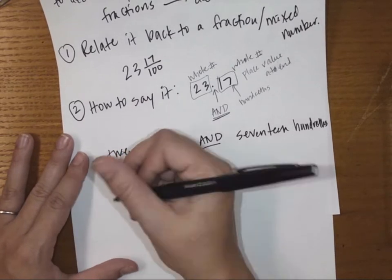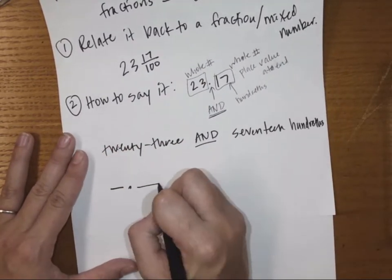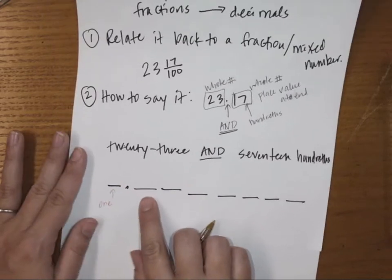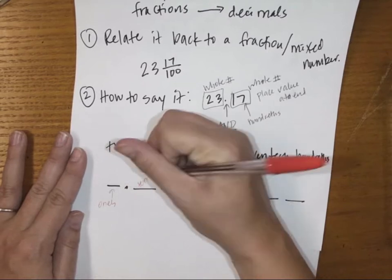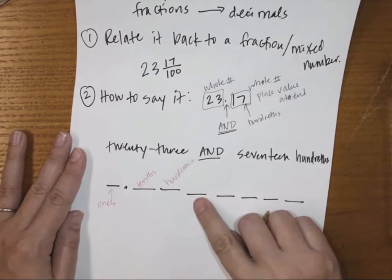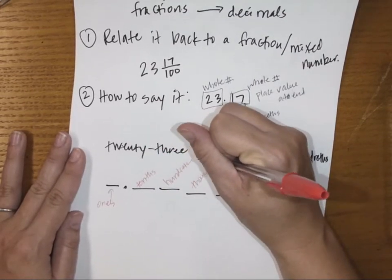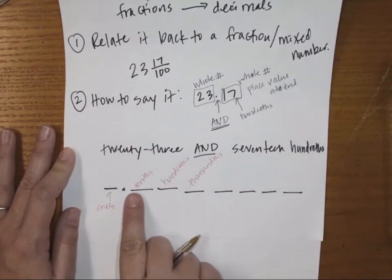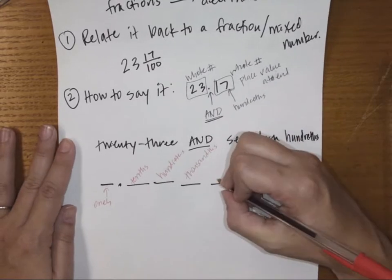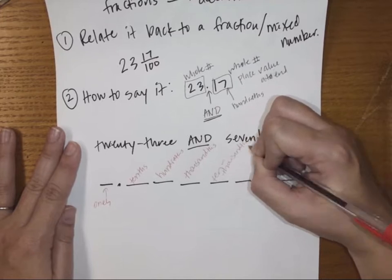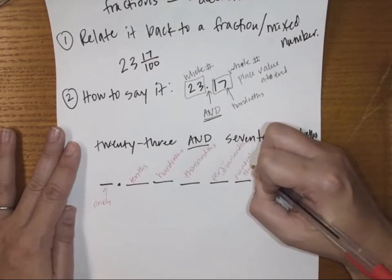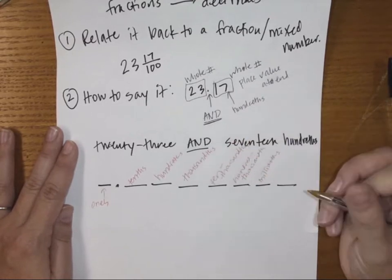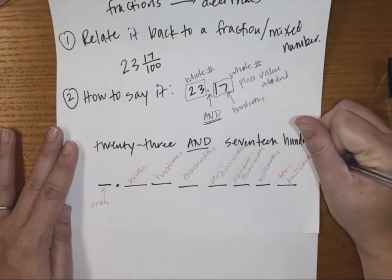As a reminder of place values: the ones place is right before the decimal. The first place value after that is the tenths, then hundredths, then thousandths — it's the same as ones, tens, hundreds, thousands but with 'th' at the end. After thousandths comes ten thousandths, hundred thousandths, millionths, ten millionths, and so on.